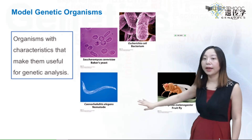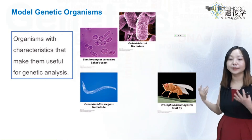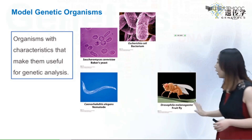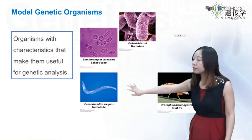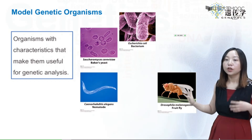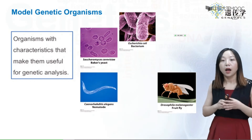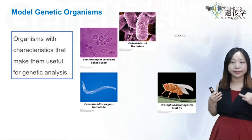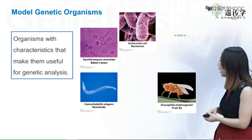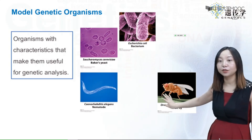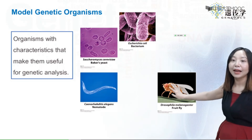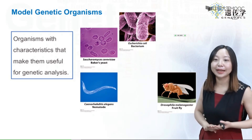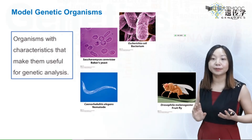We also have two star animal model organisms: the nematode C. elegans and the fruit fly. These animals have contributed greatly to our current understanding of development, human disease, aging, and many other aspects of life. As we'll discuss in later chapters, fruit flies have been a great contributor to our understanding of the principles of genetics and how development is regulated by genes.